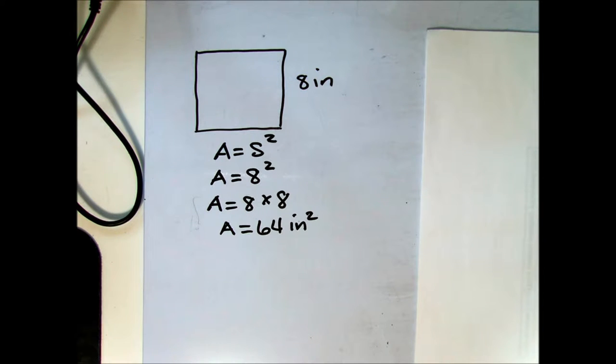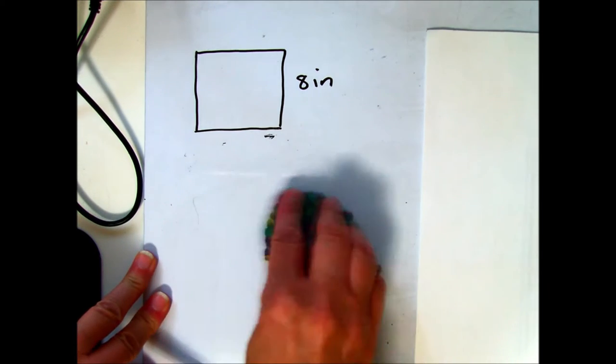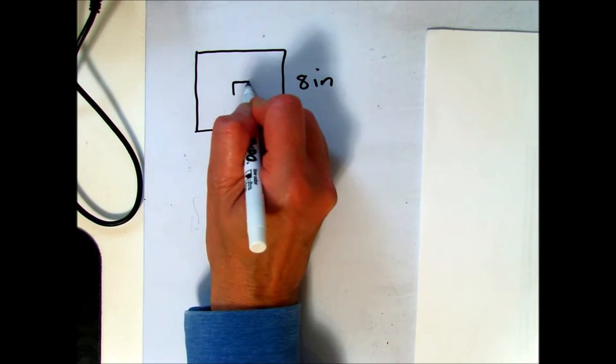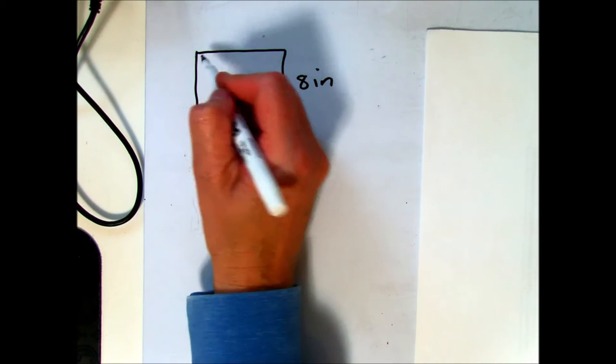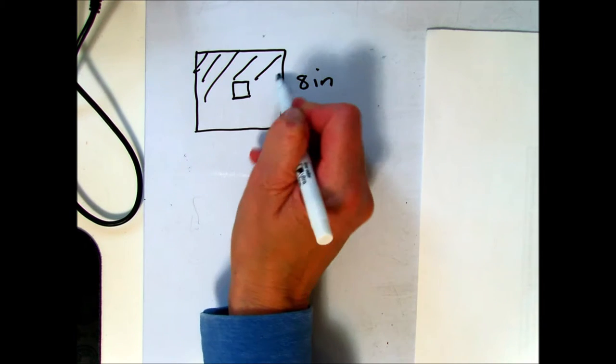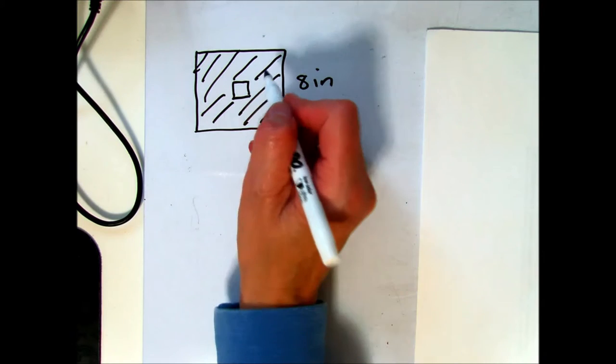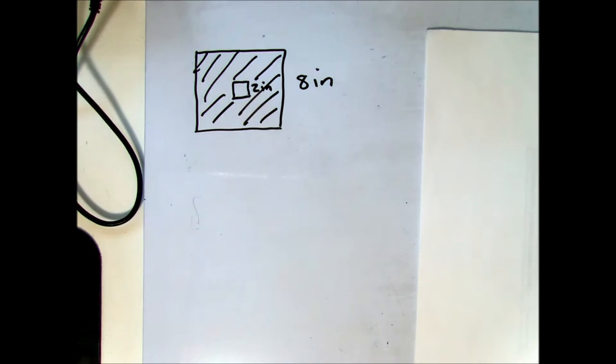On the quiz, there's a question in which we have to figure out the area of a shaded region. Let me draw that out. The picture has a square opening that's not shaded in. Let's say this opening is 2 inches, or each side is 2 inches.